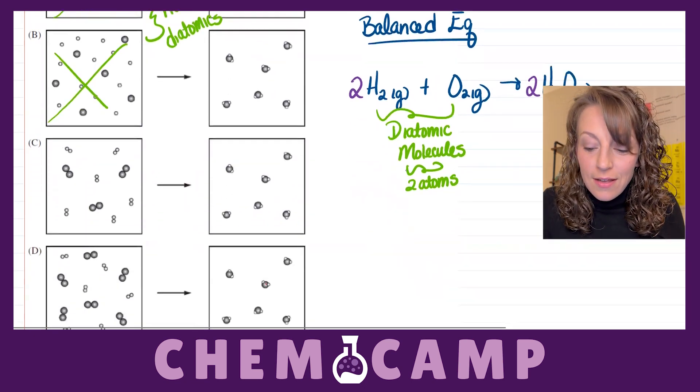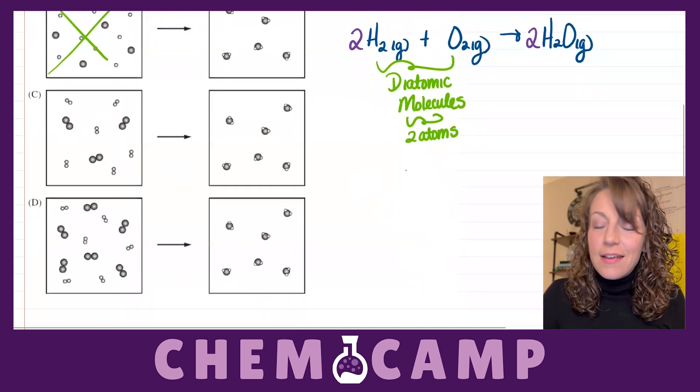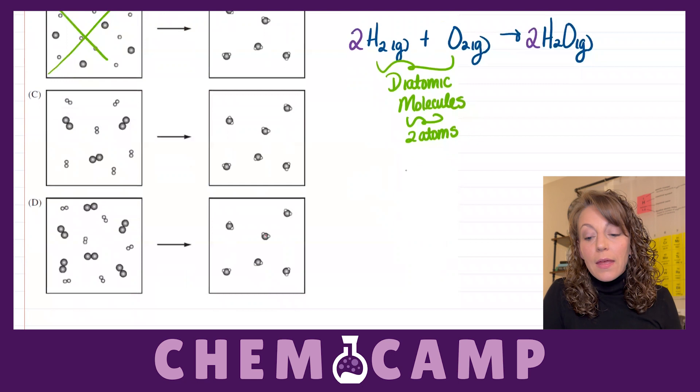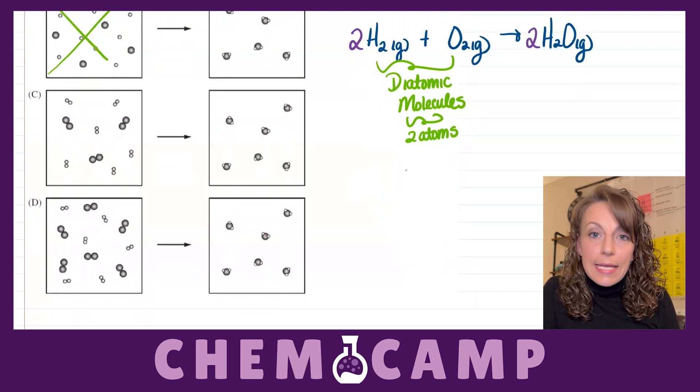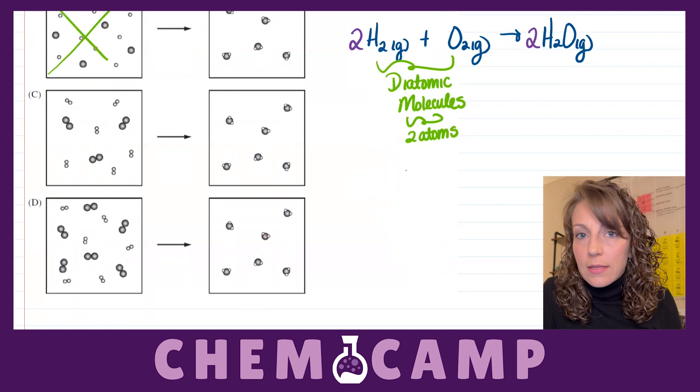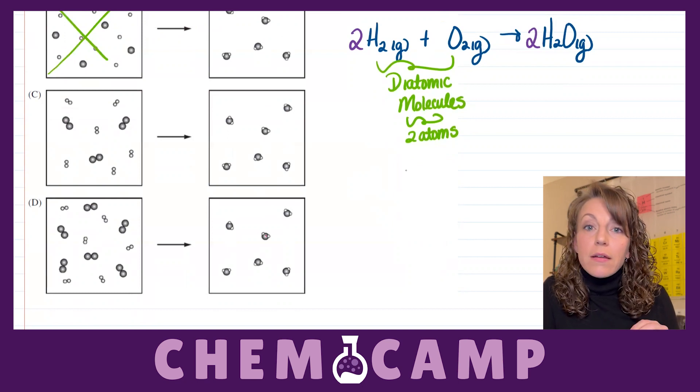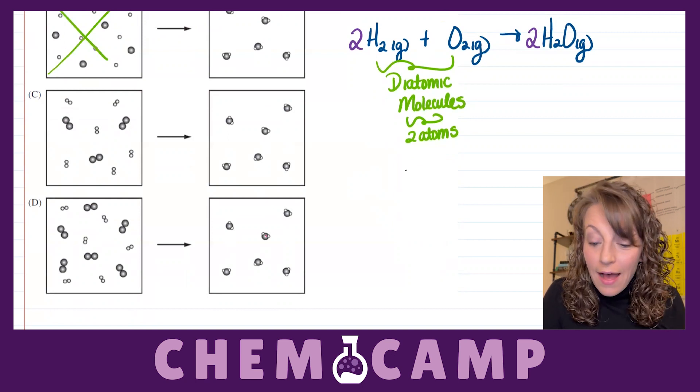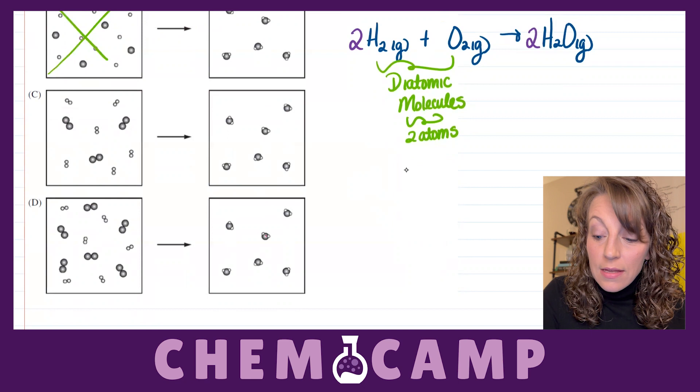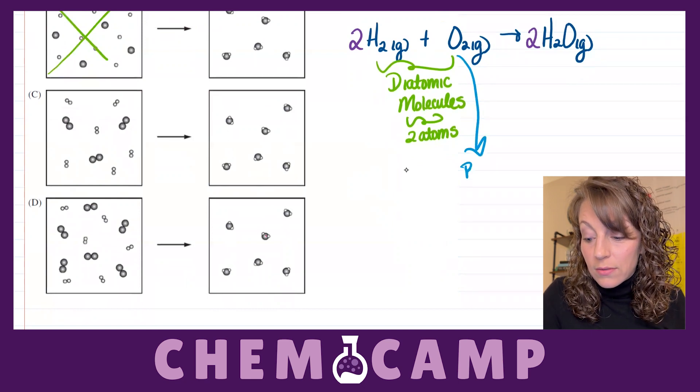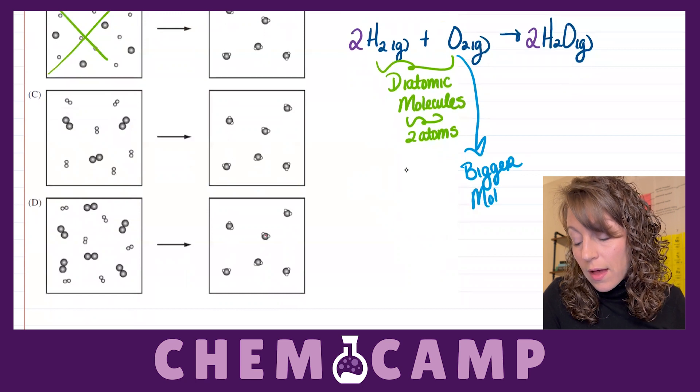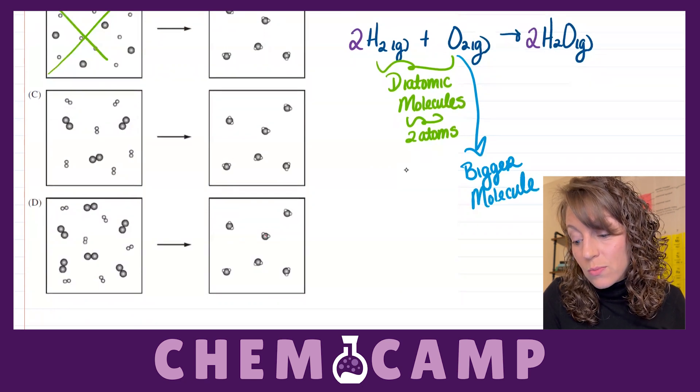So let's continue discussing our balanced equation here, so that way we can choose between C and D. From here, we need to think about the sizes of the atoms because they're going to be drawn to scale in these particulate diagrams. And our atomic radius trend is going to tell us that the oxygen atom is actually the bigger molecule. Well, the hydrogen atom should be the smaller molecule.